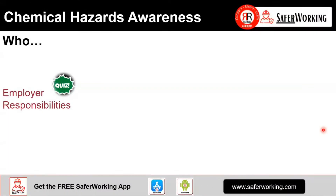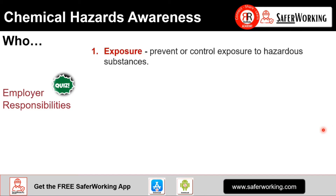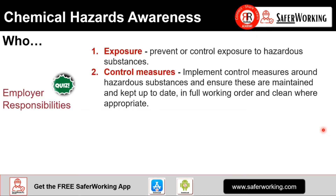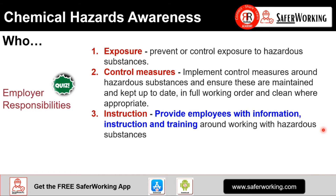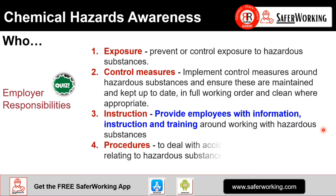When we look at who, we have to look at employers' responsibilities. There are various aspects that employers need to cover, including exposure, control measures, instruction and procedures. Instruction is an interesting one because employers have to provide employees with information, instruction and training around working with hazardous substances. You could consider this presentation as chemical hazards awareness training for your organisation.